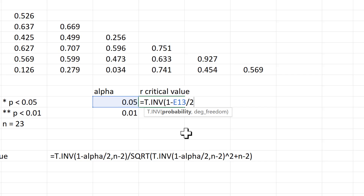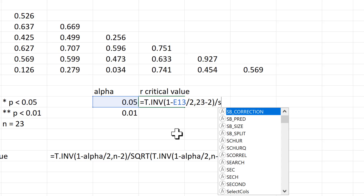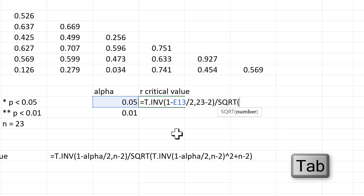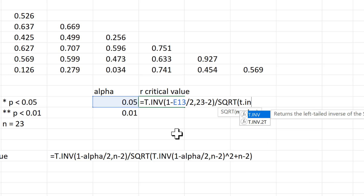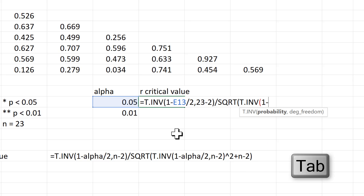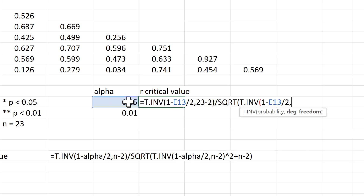The divided by 2 part is because it's a two-tailed test. Then comma and n, which is 23 minus 2, close brackets, then to the power of 2 plus n, which is 23 minus 2.